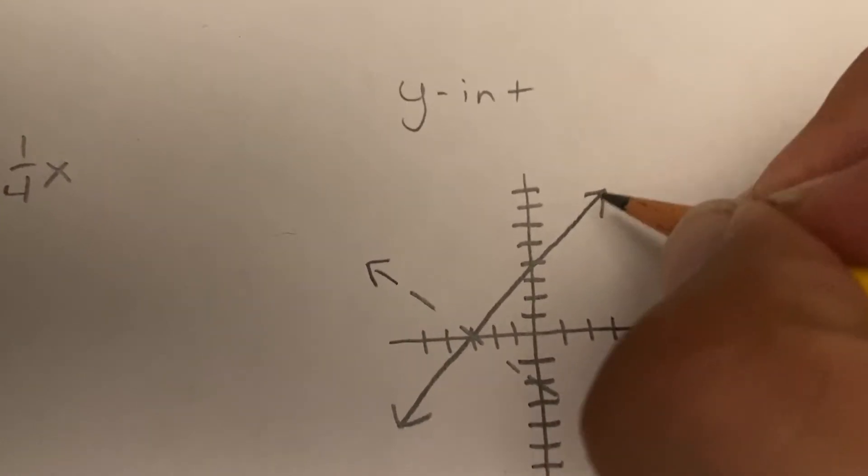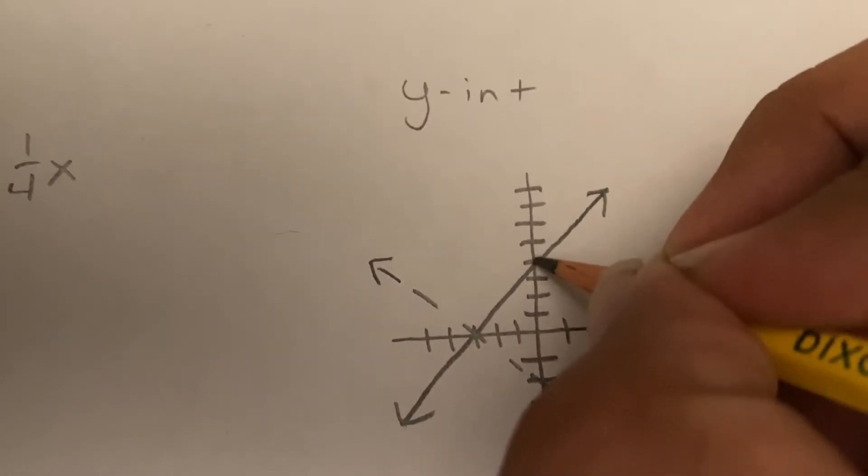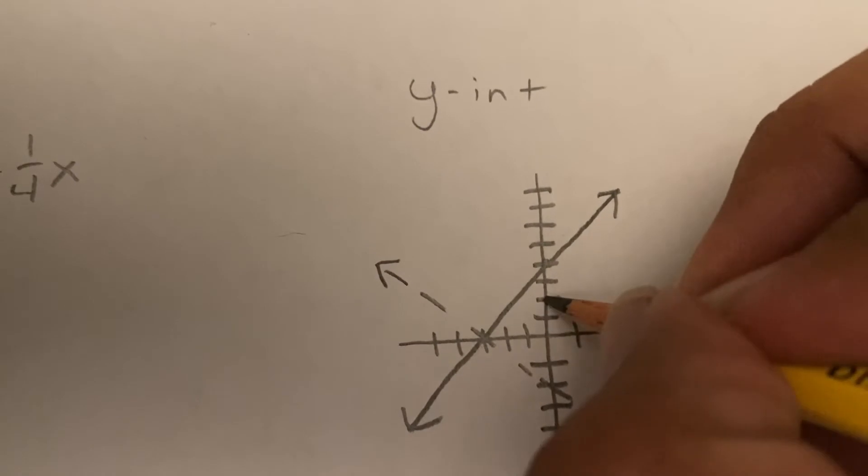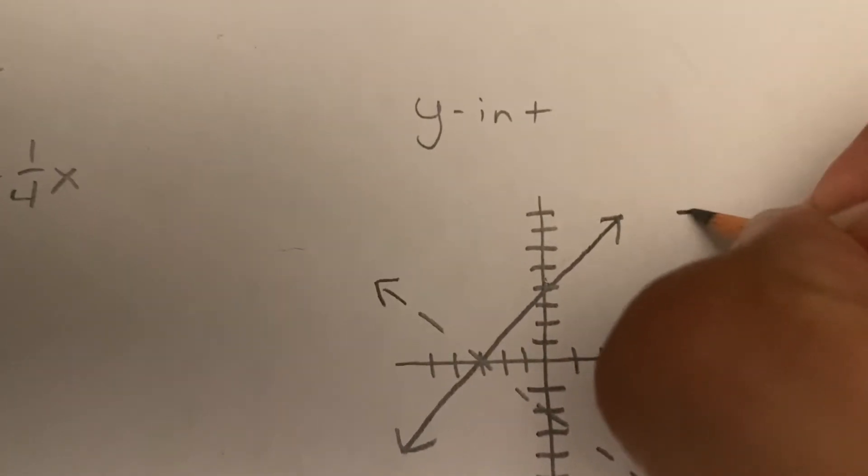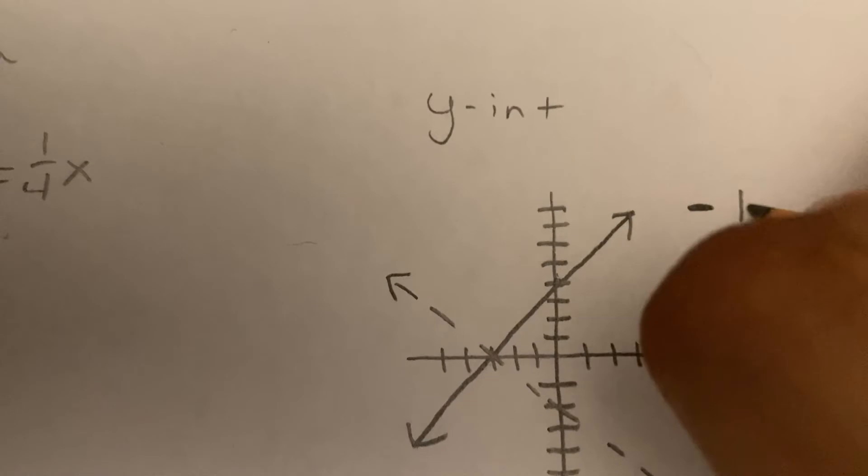So I'm checking this one first. This one, the y-intercept is right there, which is 1, 2, 3, 4. So the y-intercept for this line is 4.